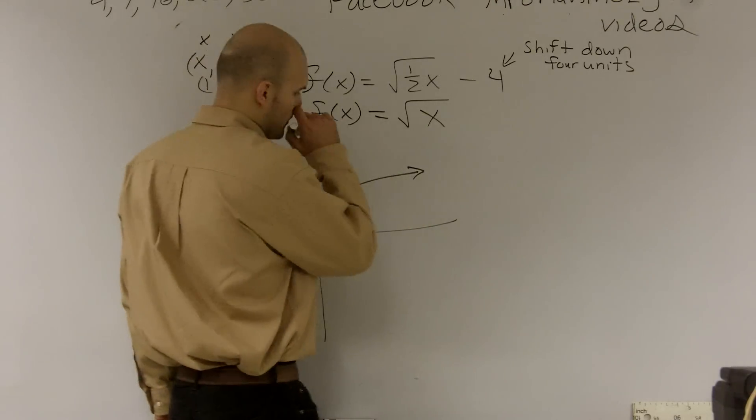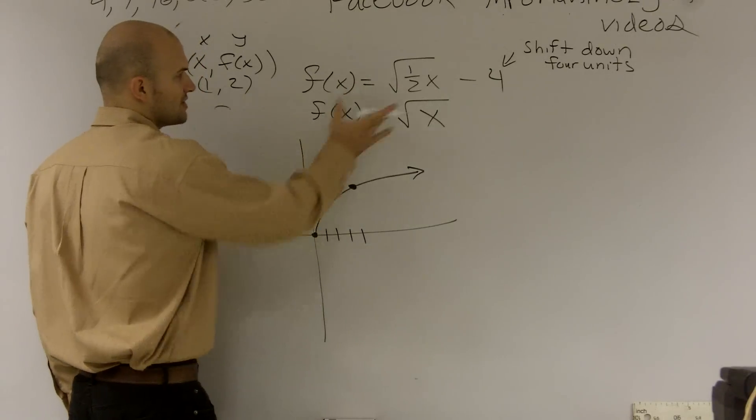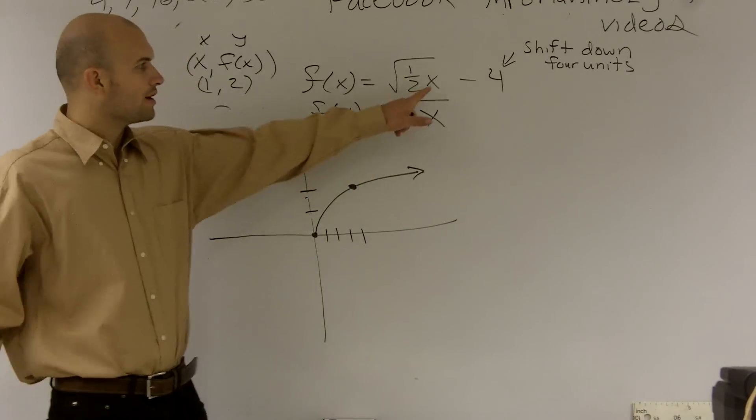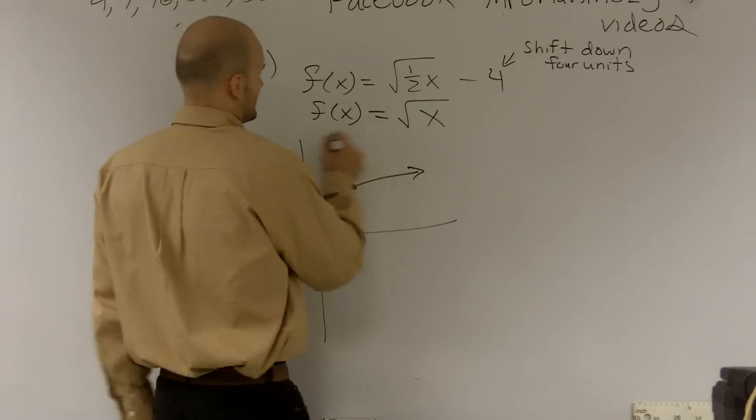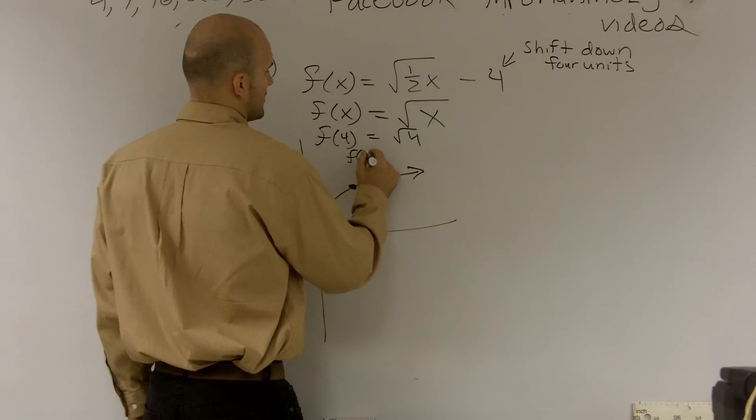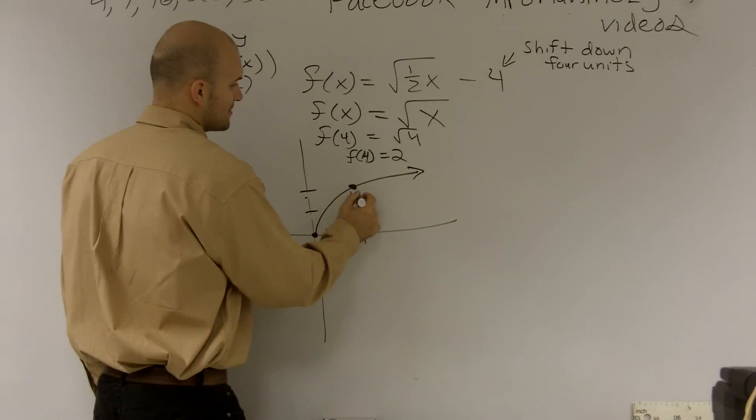Well, how about, let's say now we plug in, let's try to find this new graph. And if I plug in 4, so I do f of 4, square root of 4, f of 4 equals 2. Okay? That's what we point. That's 4 comma 2.